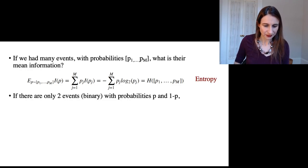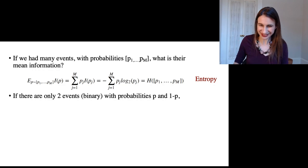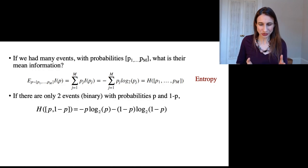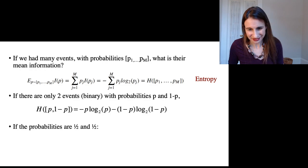Now if there are only two events, so it's just a single coin flip, and the probabilities are p and 1-p, so heads and tails, then the entropy looks like this.